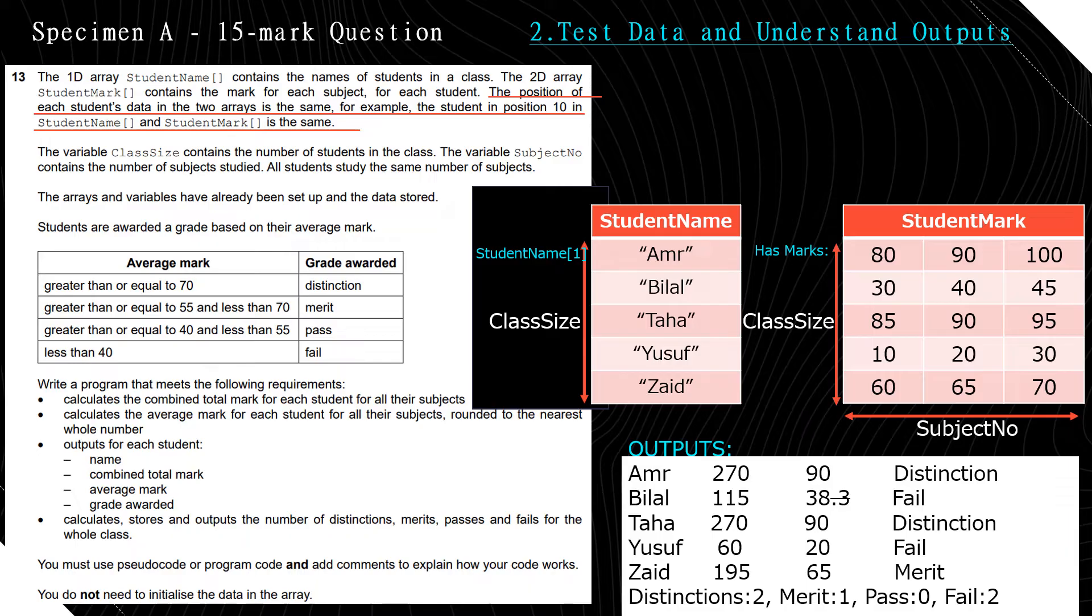So if this was our class of five students and these were their marks, this is what the program would need to output at the end. It would show Amr got 270 as a total mark. His average is 90. He got distinction. Bilal had 115 marks. And we have to round his average to only 38, which is fail. Taha got 270 total marks. His average is 90 over these three marks and distinction.